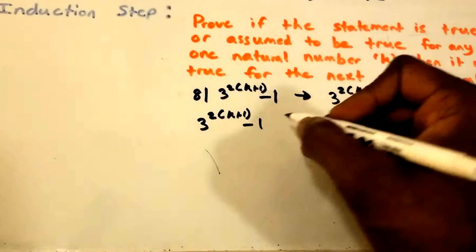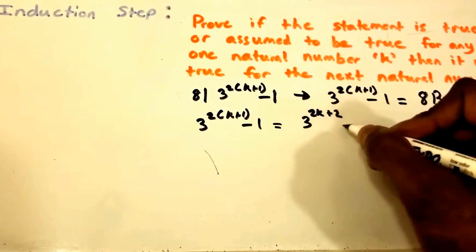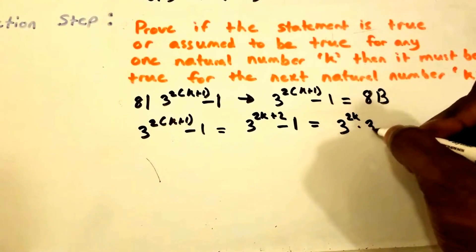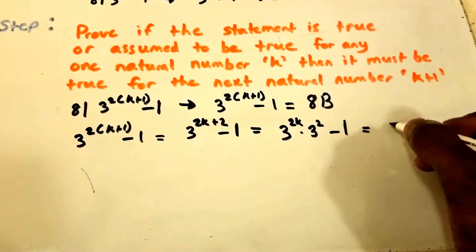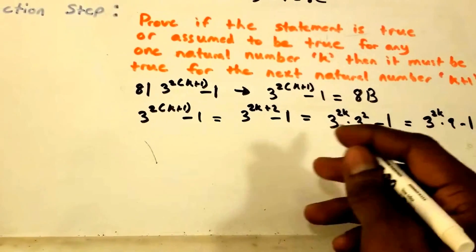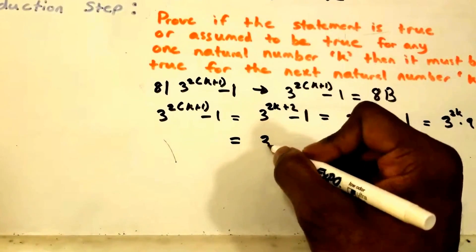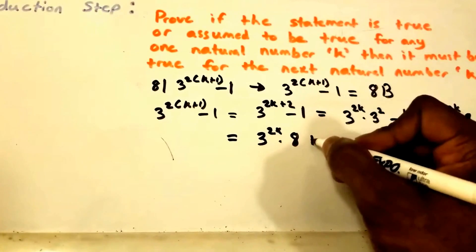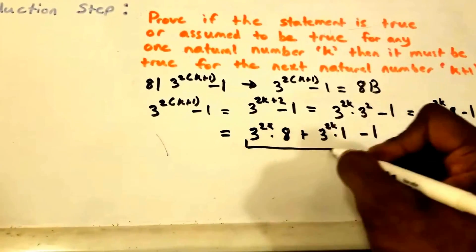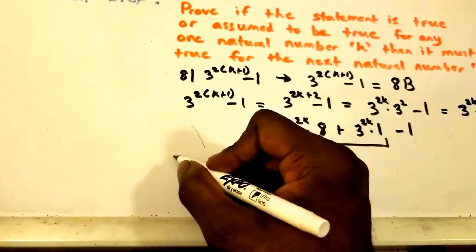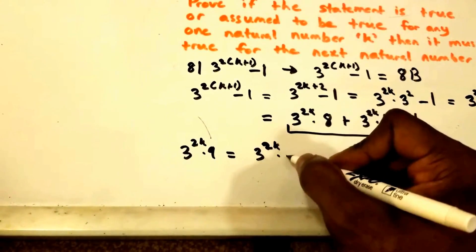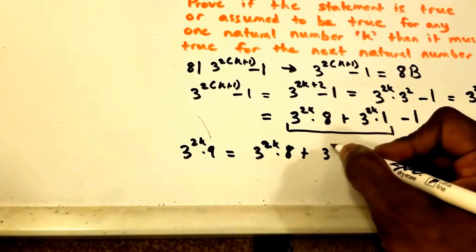So what exactly is 3 to the power of 2(K+1) minus 1? Well, this equals 3 to the power of 2K+2 minus 1, which equals 3 to the power of 2K times 3 squared minus 1. This equals 3 to the 2K times 8 plus 3 to the 2K times 1 minus 1, since 3 to the 2K times 9 equals 3 to the 2K times 8 plus 3 to the 2K times 1.